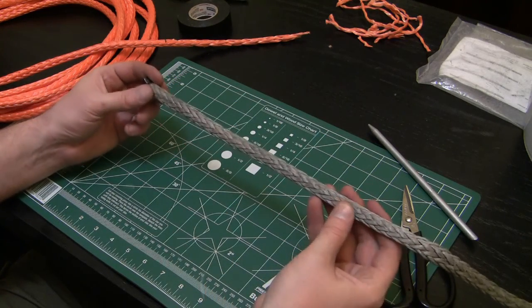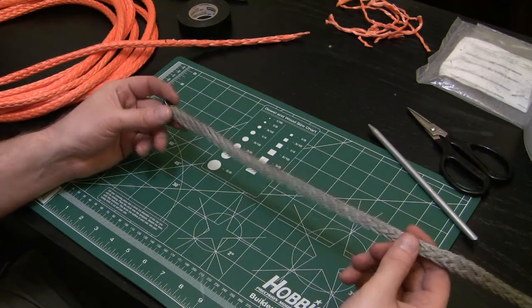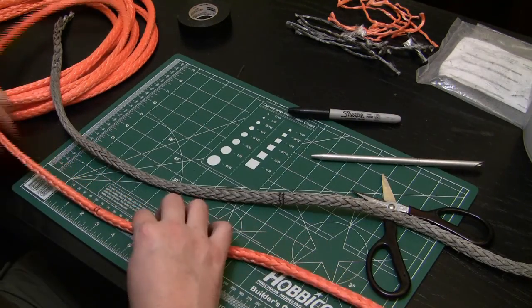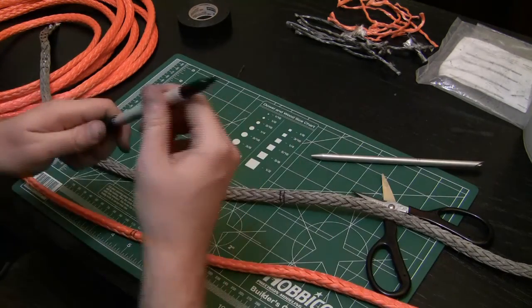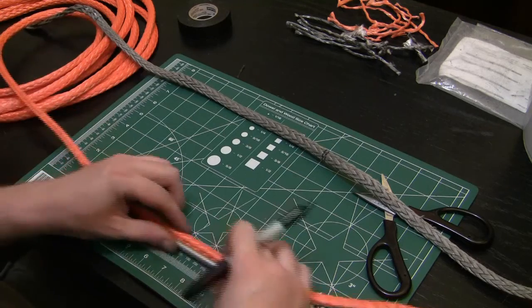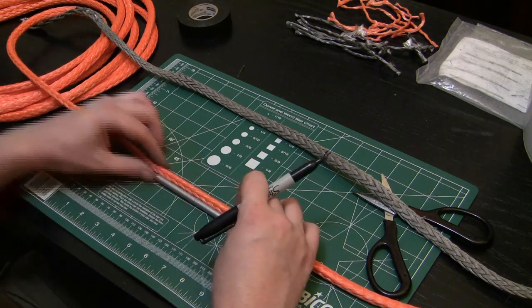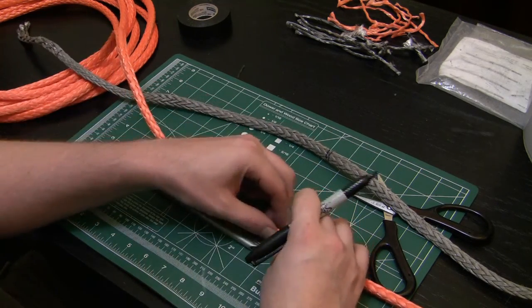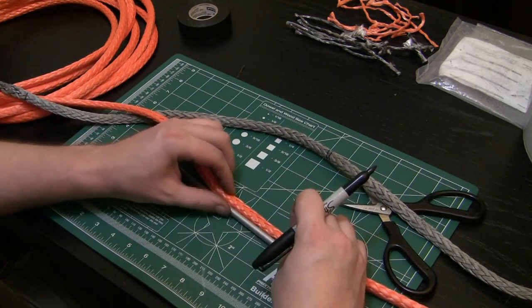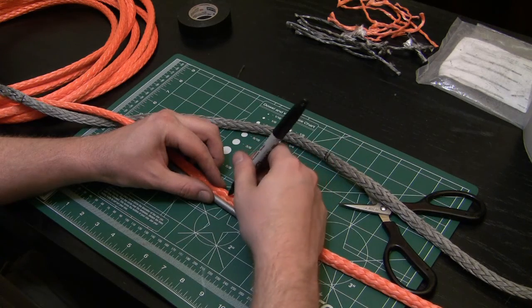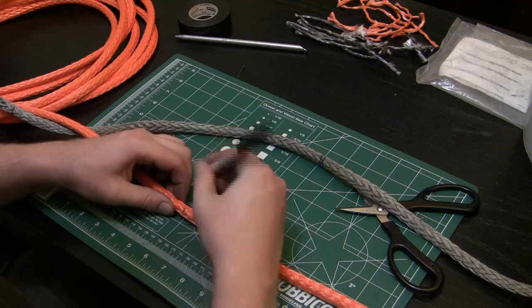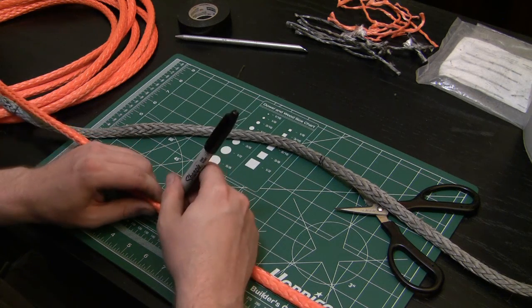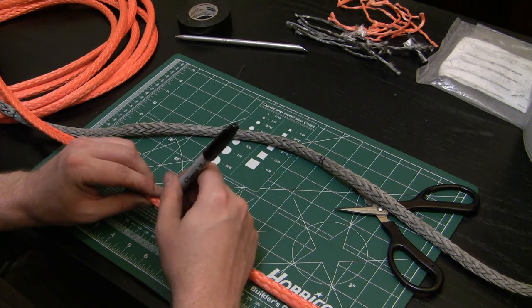This is the other part—this is the line that was on my winch already—and we're going to repeat the same process. Now what we want to do is mark our exit. For mark two we're going to go one, two, three and a half fid lengths. Make this mark go all the way around.